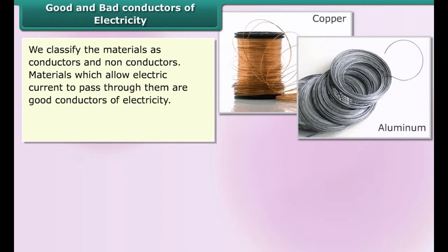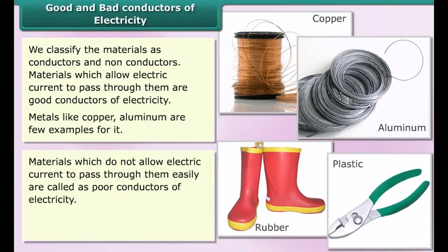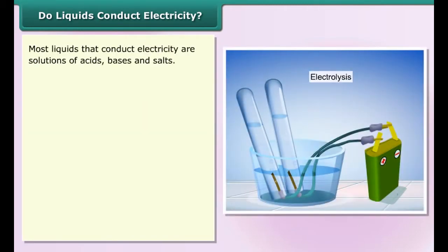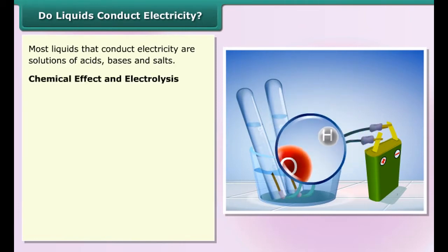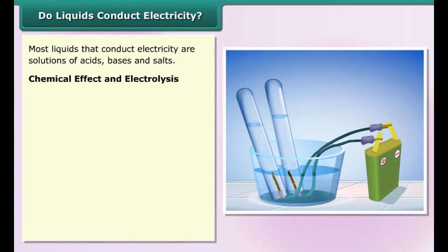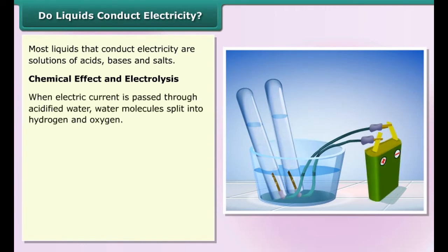We classify materials as conductors and non-conductors. Materials which allow electric current to pass through them are good conductors of electricity. Metals like copper and aluminum are examples. Materials which do not allow electric current to pass through them easily are called poor conductors of electricity. Materials such as rubber and plastic are examples of this. We use testers to test the conductivity of materials which are in solid state.